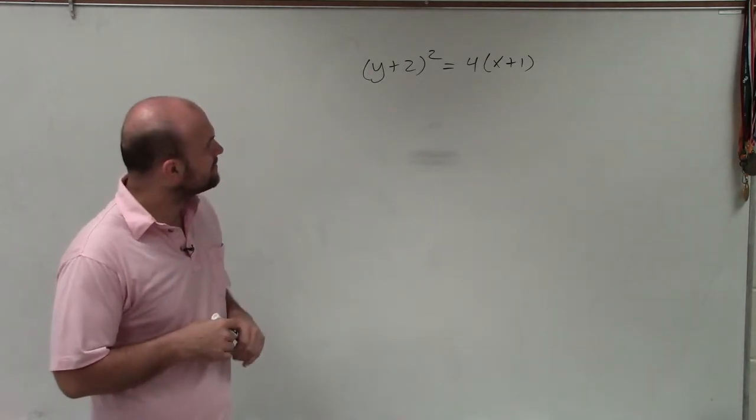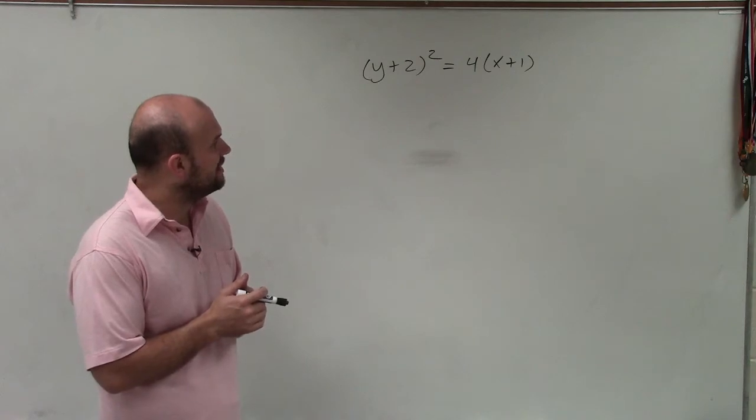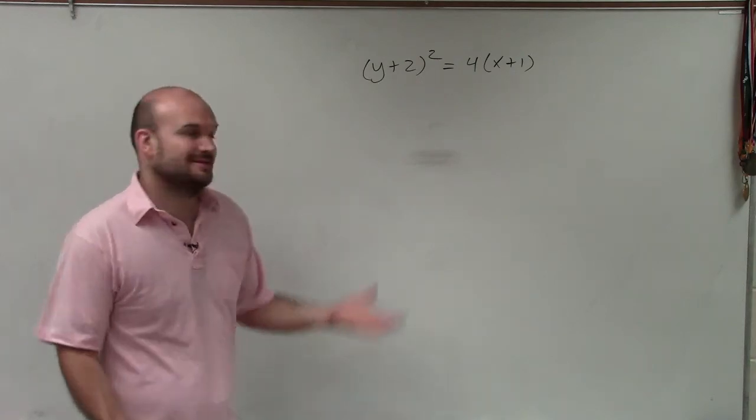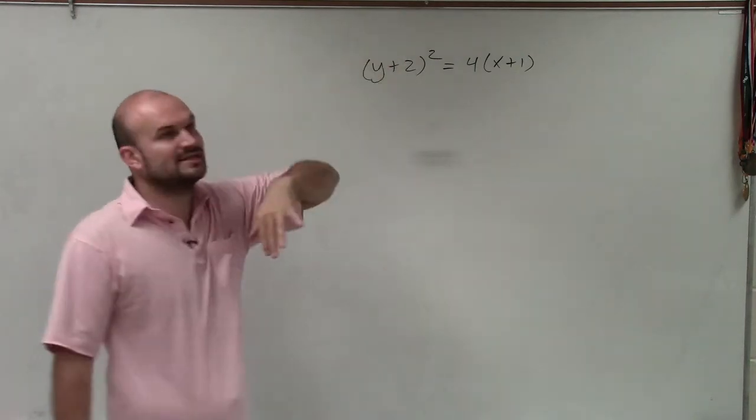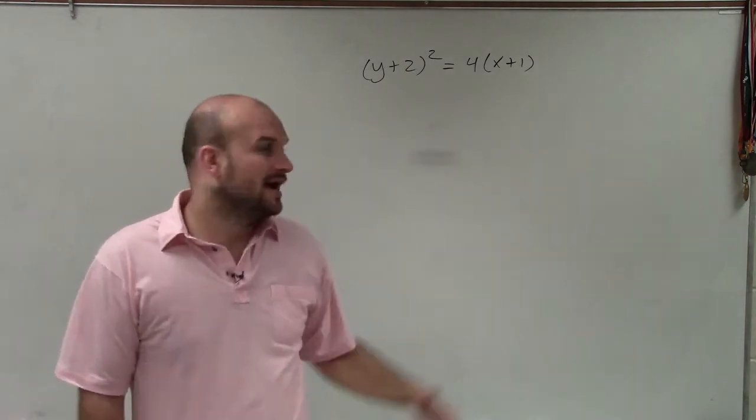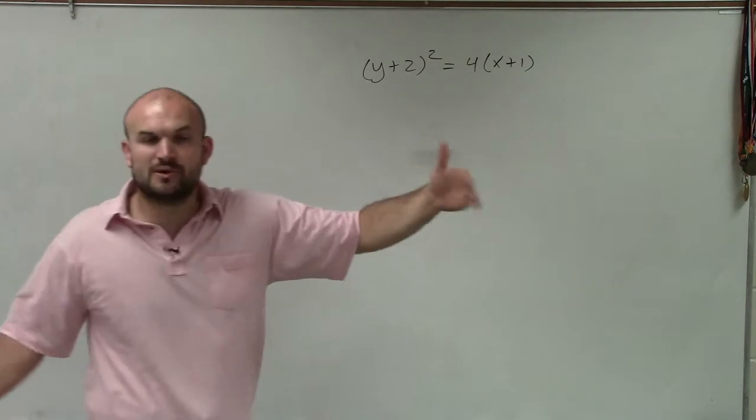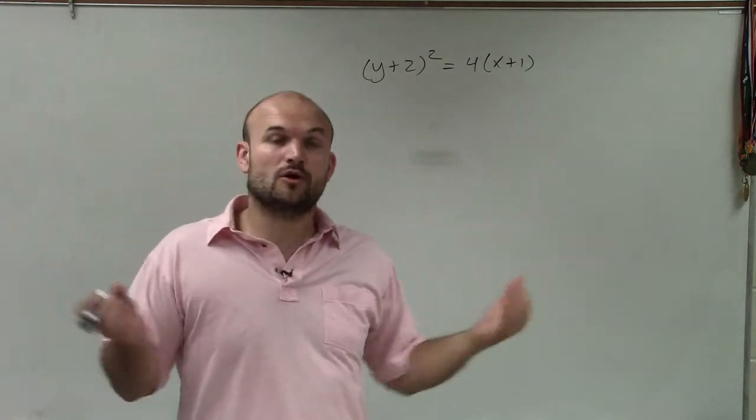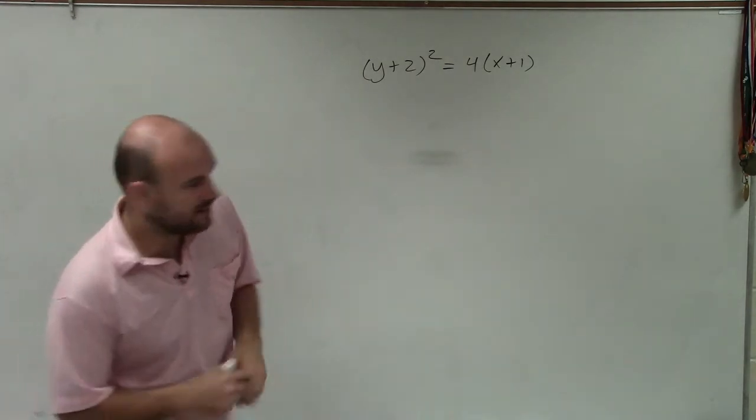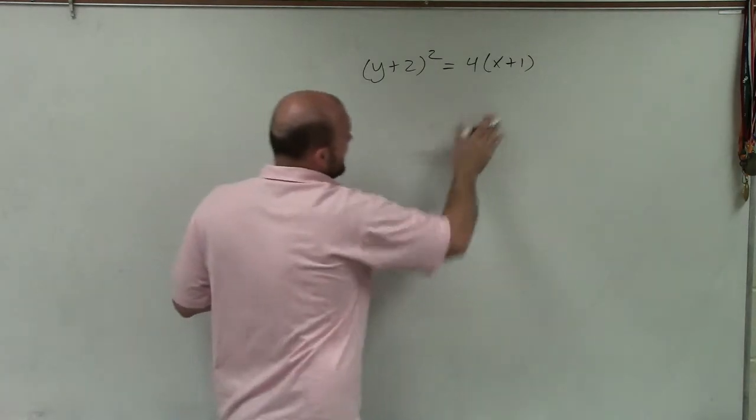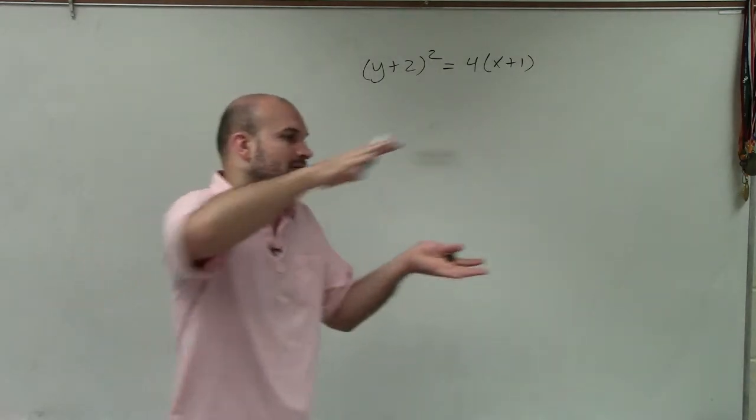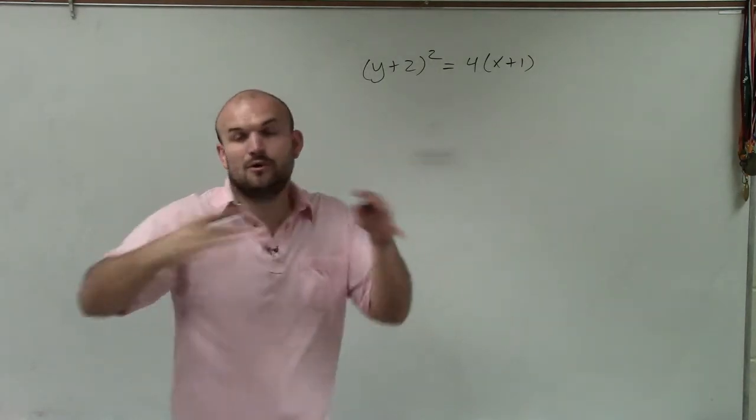So the first thing we want to do is be able to identify what type of parabola this is going to be. And I can do that by looking at what variable is going to be squared. If we were to expand this, we'd see that y plus 2 squared - our y variable is the one that's going to be squared. Therefore, when we have a y squared, we know that our parabola is going to open up to the right or to the left.